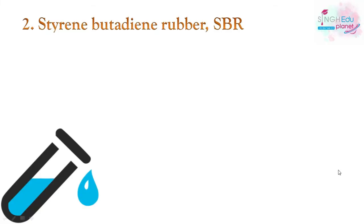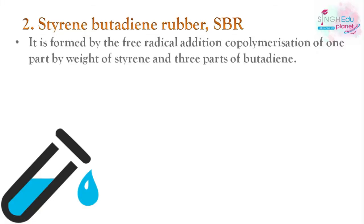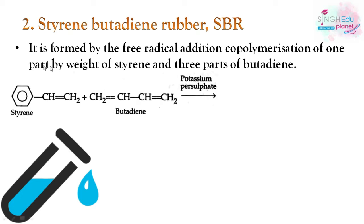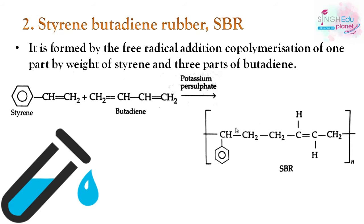Next is styrene-butadiene rubber, or SBR. It is formed by free-radical addition co-polymerization of one part by weight of styrene — which has a benzene ring — and three parts of 1,3-butadiene. The reaction is done in the presence of the catalyst potassium persulfate, and SBR is obtained with the double bond shifted in the polymer chain.